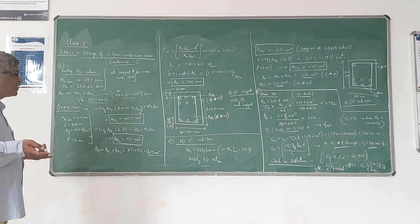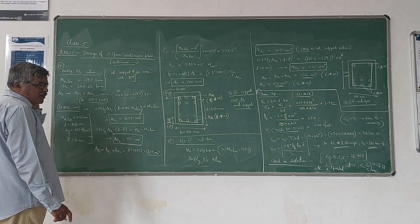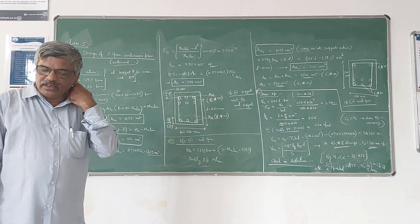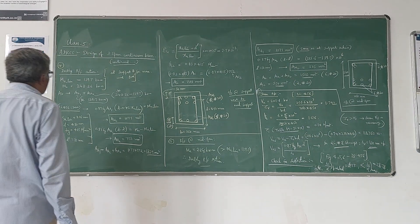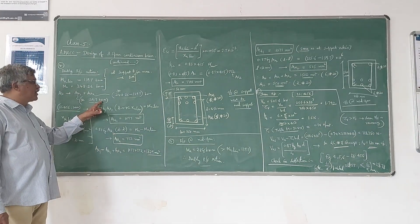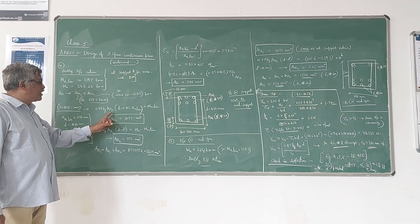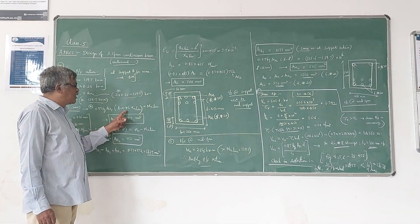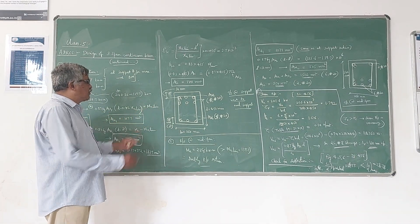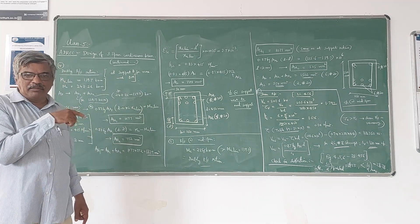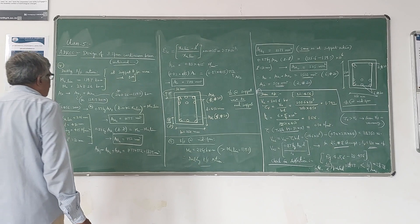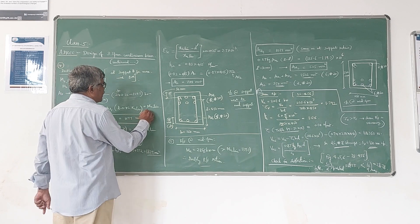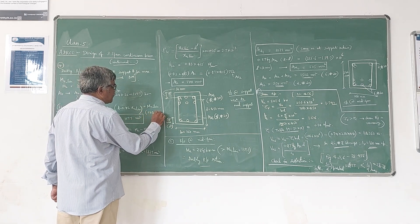These are concepts from your earlier course level. As per IS 456:2000 we are going to design it. First we have to calculate AST1, the tension steel required to take care of 138.7 kNm. The equation used is: 0.87 Fy × AST1 × (d − 0.42 × AST1) = MU_lim. This is the ultimate moment of resistance formula. Equating this to MU_lim, we convert to Newton-millimeter — this is very important.